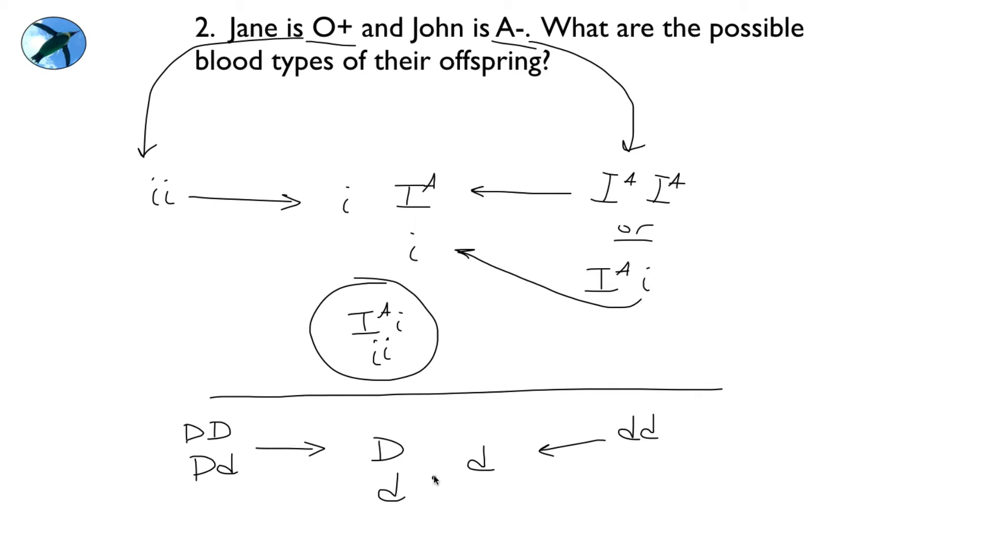So what combinations can you make? Can you make an Rh positive child? The answer would be yes, you would be heterozygous. Can you make an Rh negative child? And the answer would be yes, a little d here and a little d there. So this couple could make offspring that are either positive or negative.